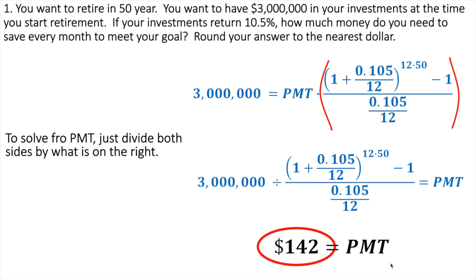That assumes you're going to retire in 50 years. If you retire at the normal age of 65, that means you'd start saving when you're 15. So at 15 years old, $142 a month is all you need every single month.